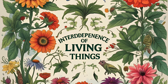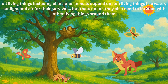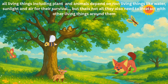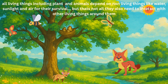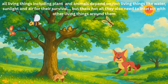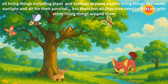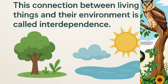Hello friends. Today, we are learning on the topic: Interdependence of Living Things. All living beings, including plants and animals, rely on non-living things like water, sunlight, and air for their survival. But that's not all — they also need to interact with each other to stay alive. This connection between living things and their environment is called interdependence. It shows how everything in nature is linked together.